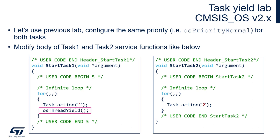As a result, at the beginning Task 1 would be executed, so we can see task_action 1. Then it will immediately go to the ready state, giving the remaining time within its assigned one millisecond to Task 2. Assuming the MCU is fast enough, within that one millisecond we can expect Task 2 to execute more than once — so we'll see a '1' followed by several '2's.